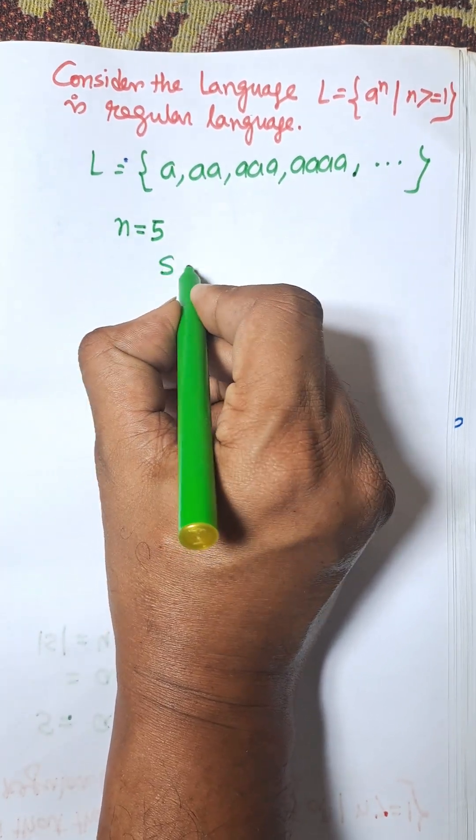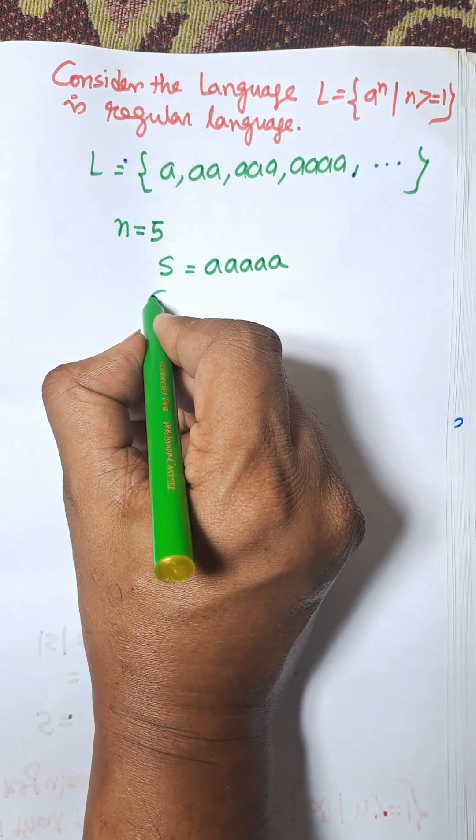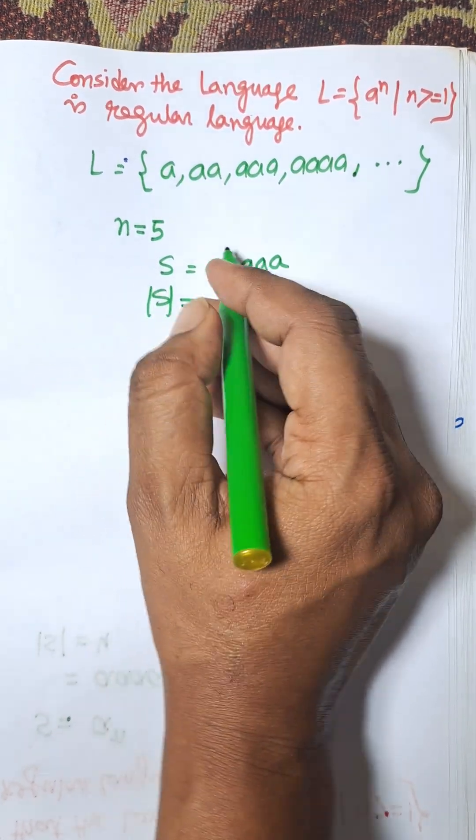So, s is equal to aaaaa. Now, length of s is equal to 5.